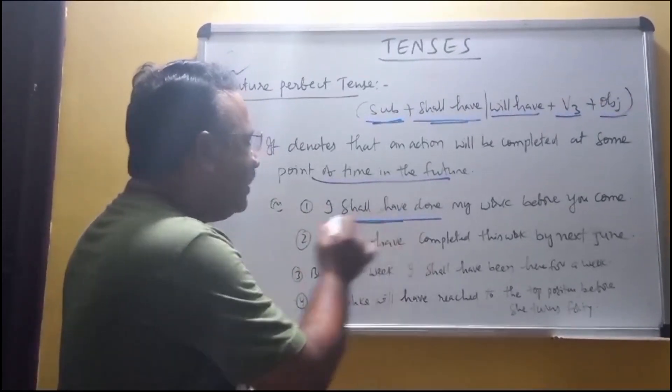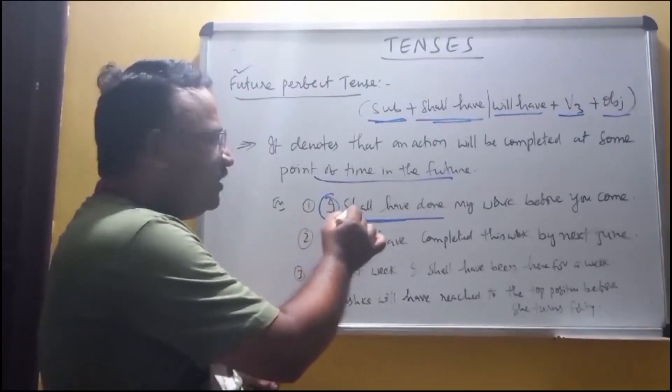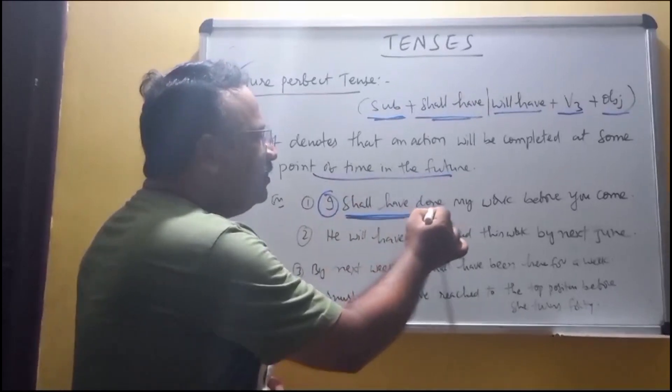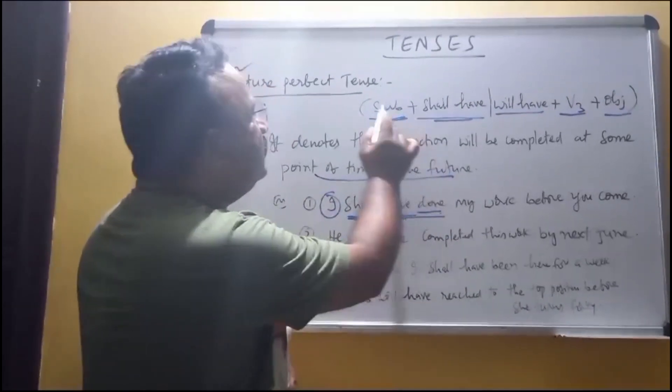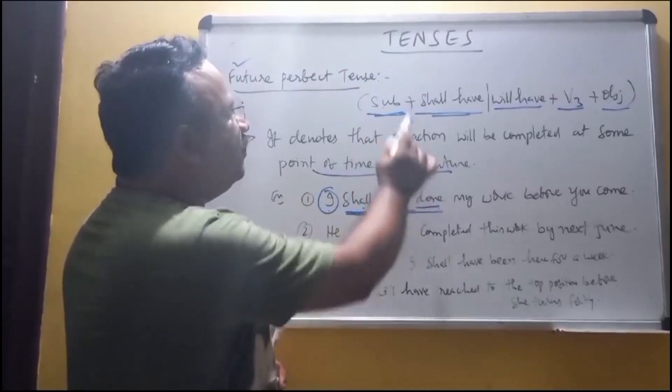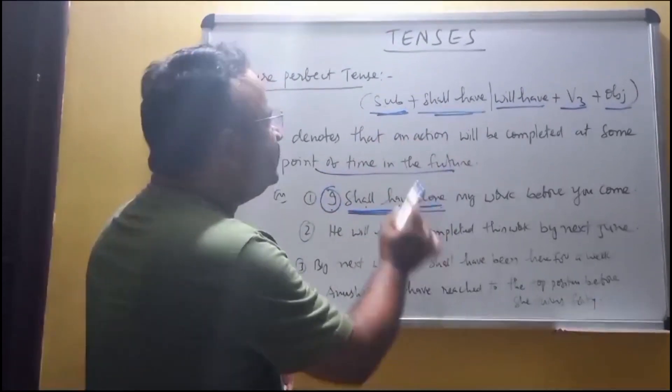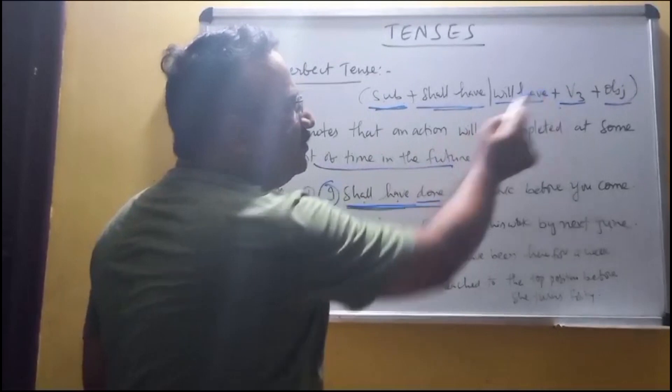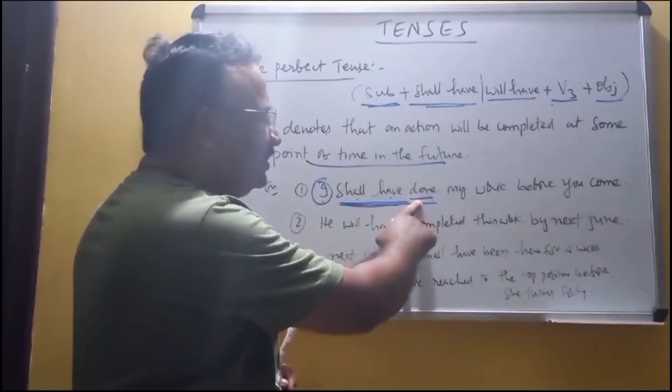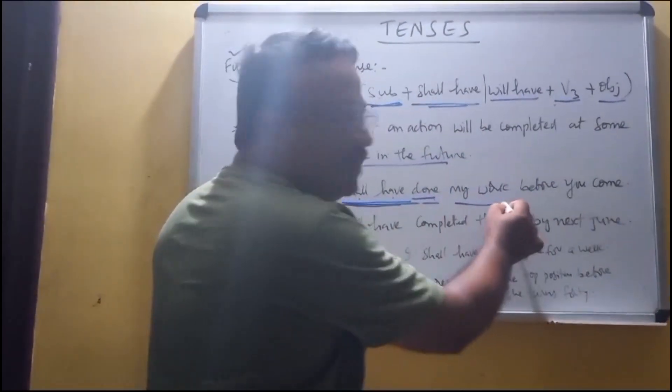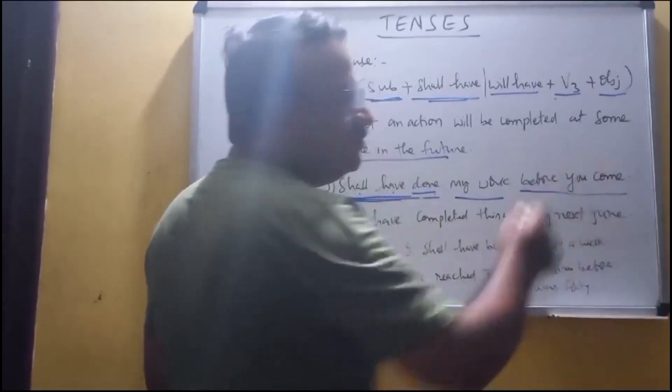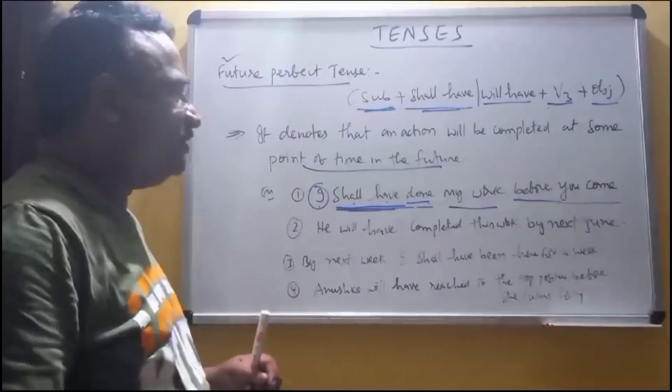See, shall have, I shall have. So you shall have done. See subject, I shall have. That's done, v3: do, did, done. So v3, my work object, before you come.